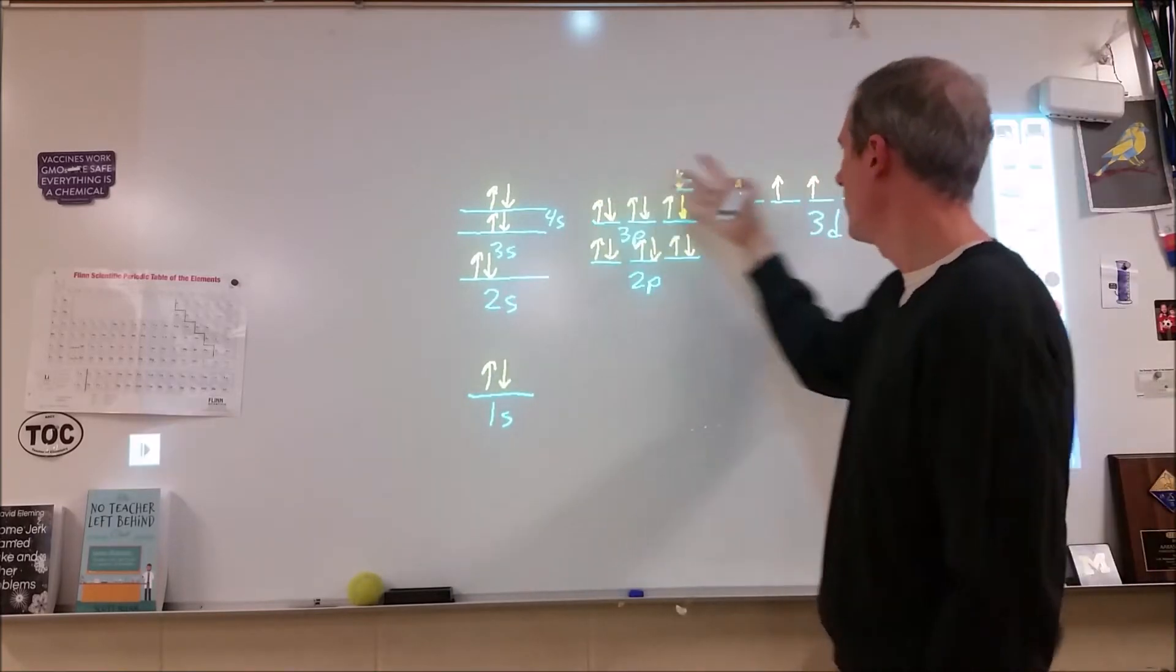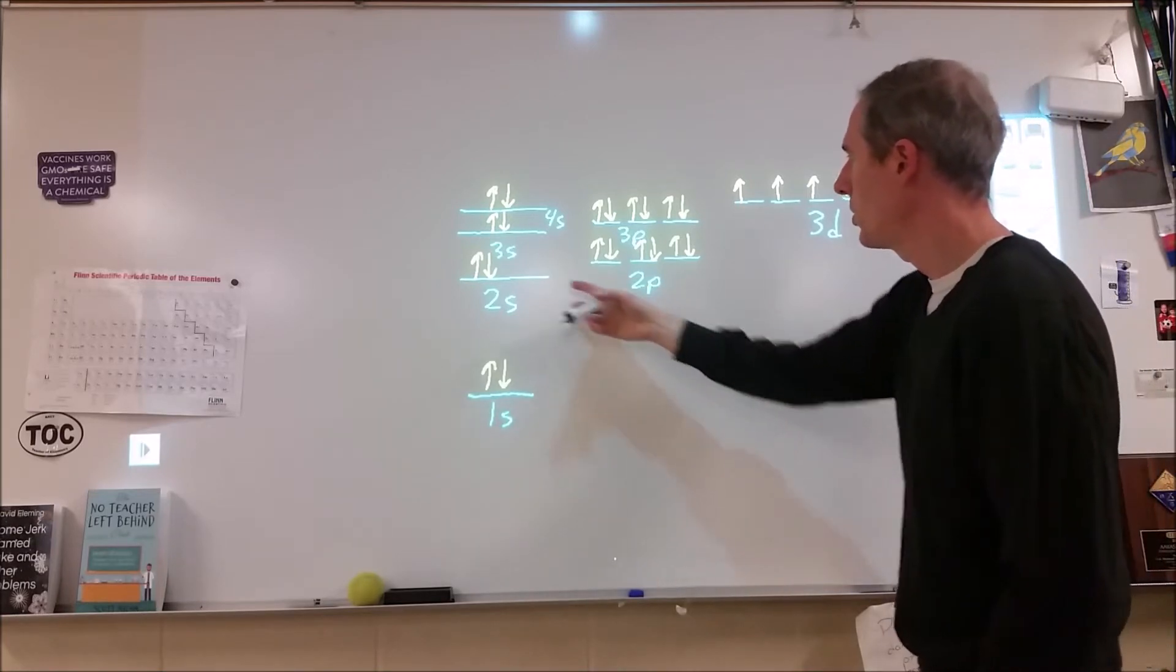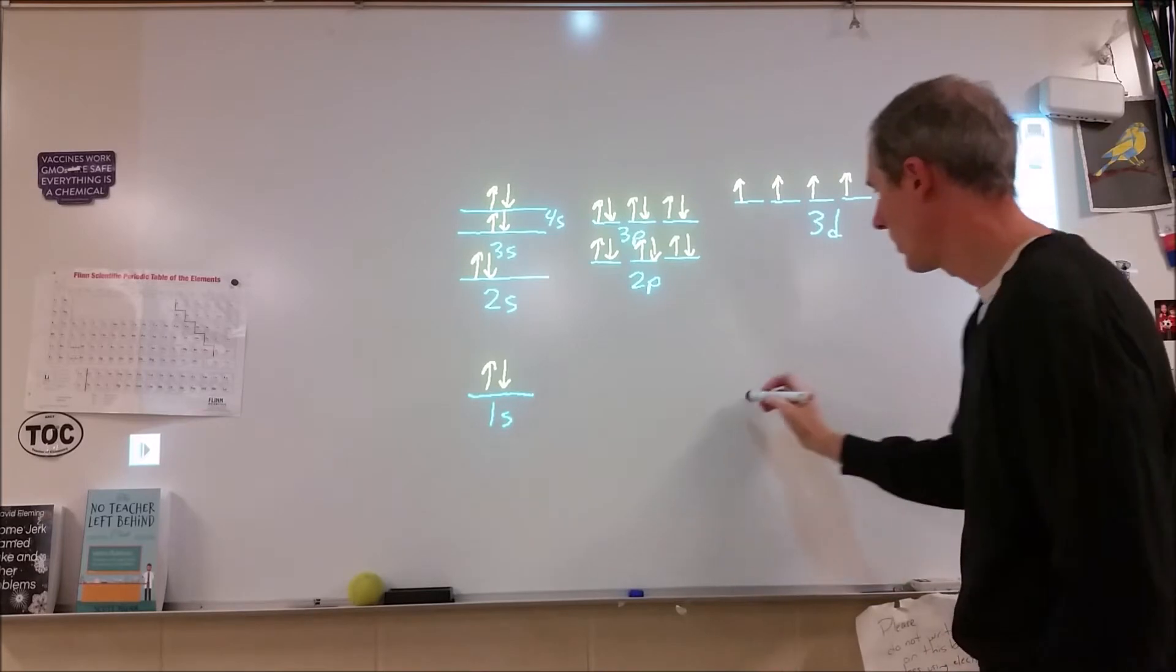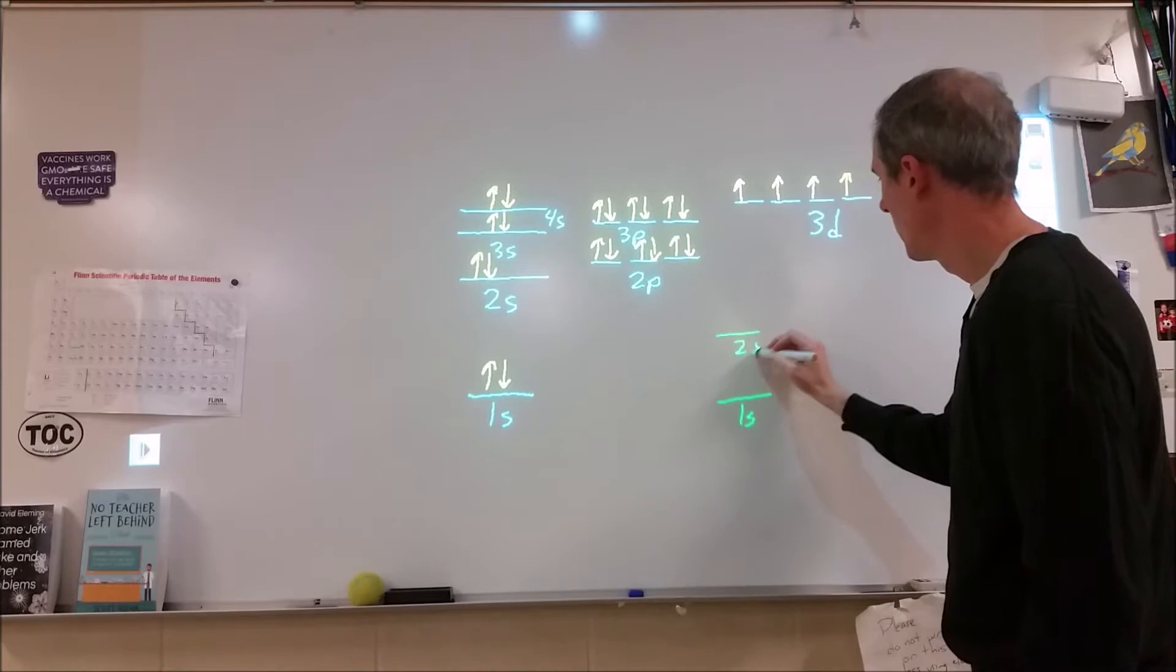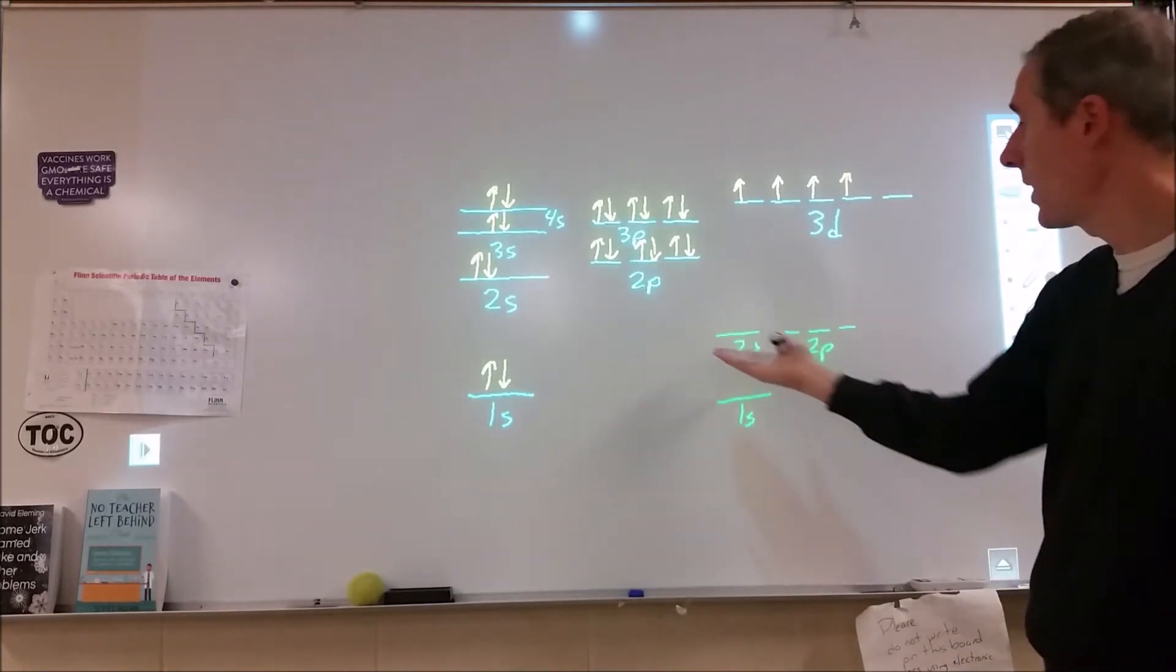If we just had all these blank with no electrons in them, then when we look at these 2s and 2p orbitals, we would see something that looks a little more like this. We would have 1s, we would have 2s, and 2p would be what we call degenerate. They would be the same in energy.